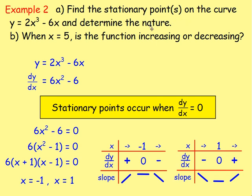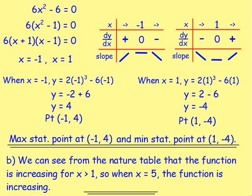Find the stationary points on the curve and determine their nature. First, think: stationary points occur when dy by dx equals zero — so differentiate, then set it equal to zero and find the values of x. Once you find these values, use the nature table to determine if each is a maximum turning point, minimum turning point, or point of inflection — taking a value just before and just after and substituting into the derivative. If you're asked for the actual point, sub the x value back into the original equation to work out y. You can then identify your maximum and minimum stationary points.